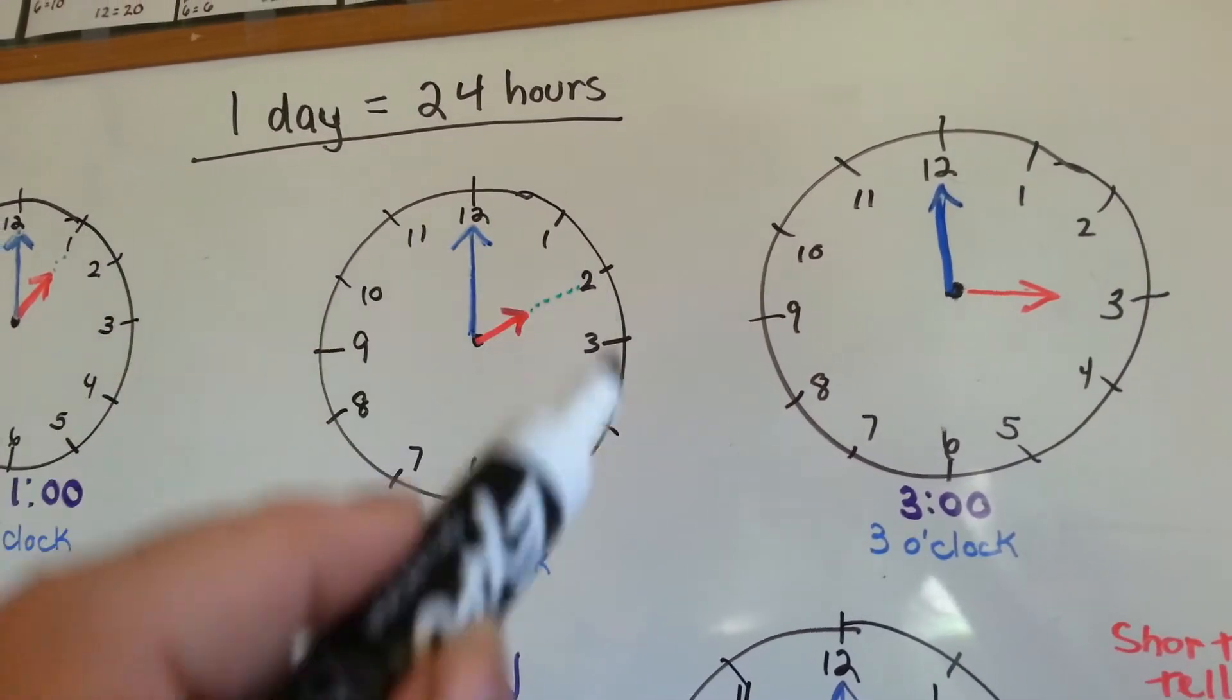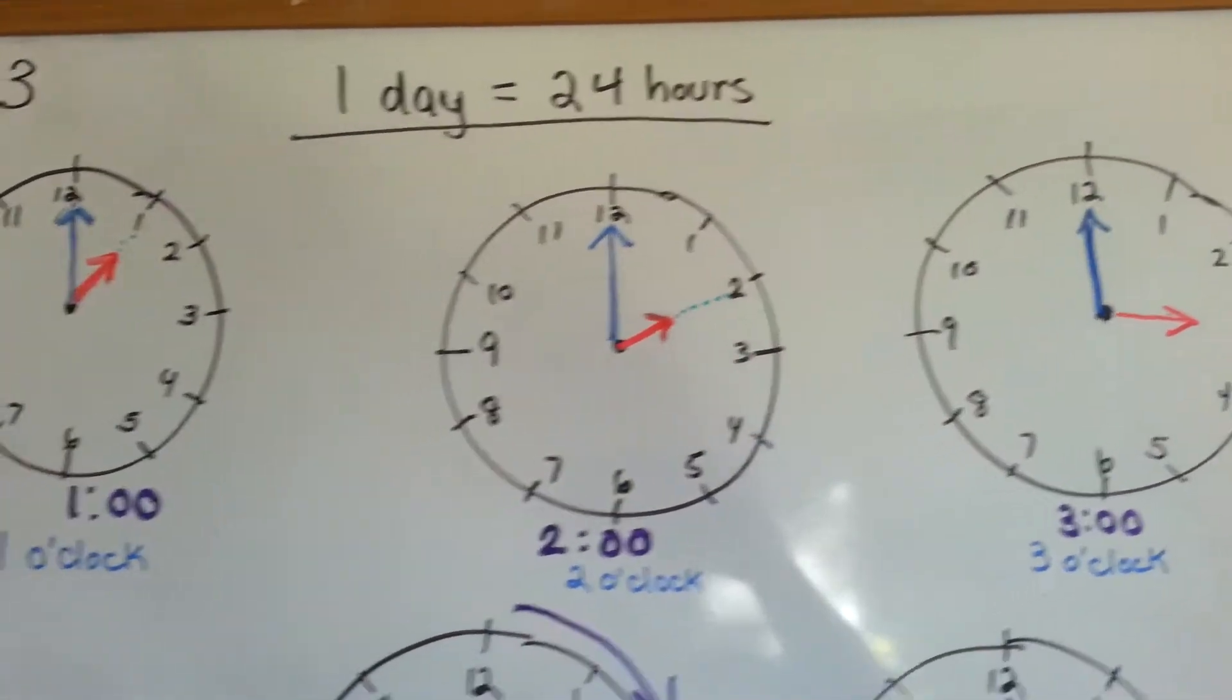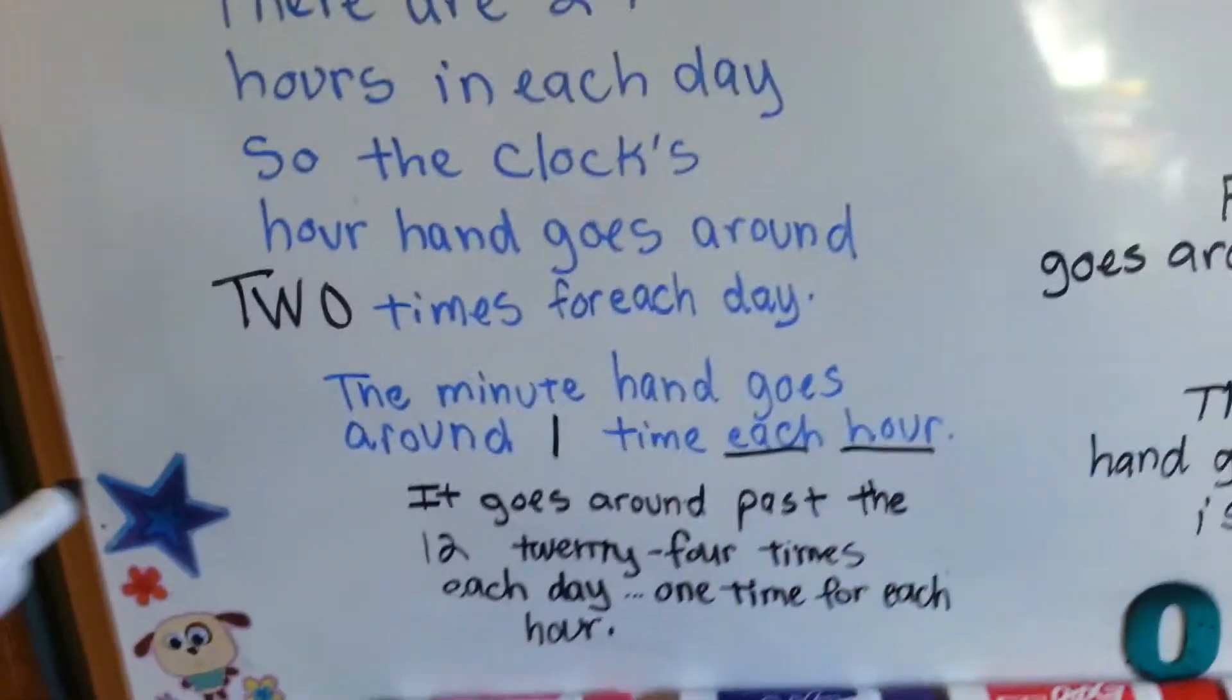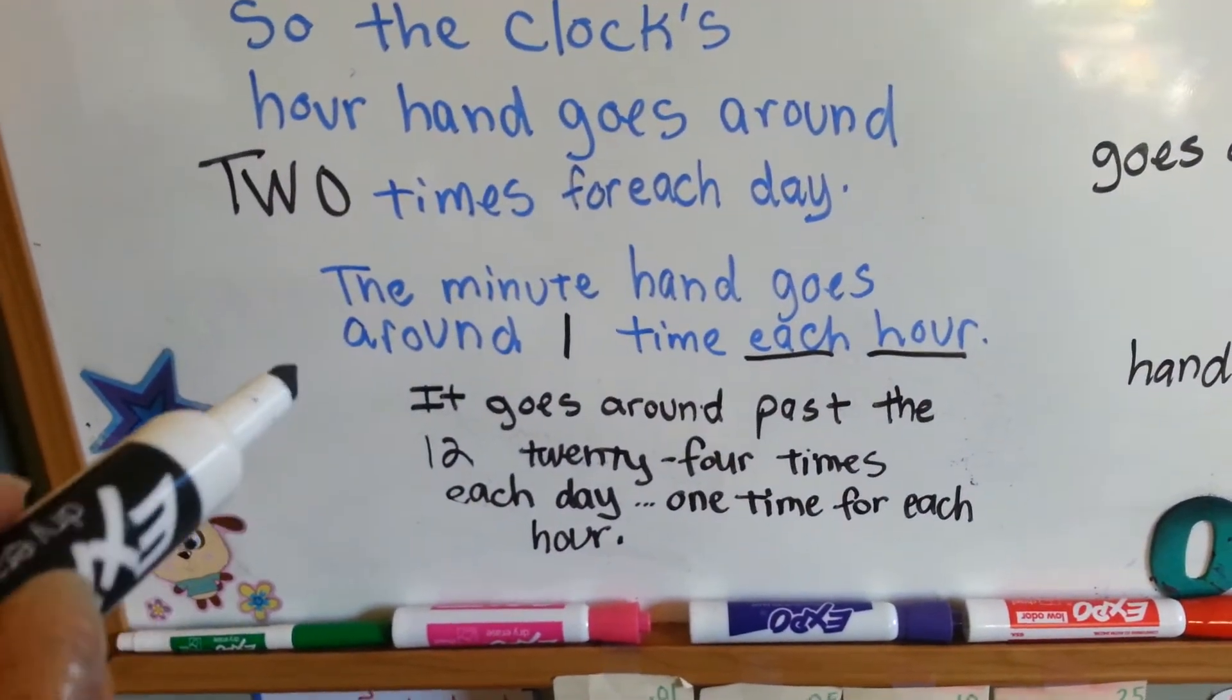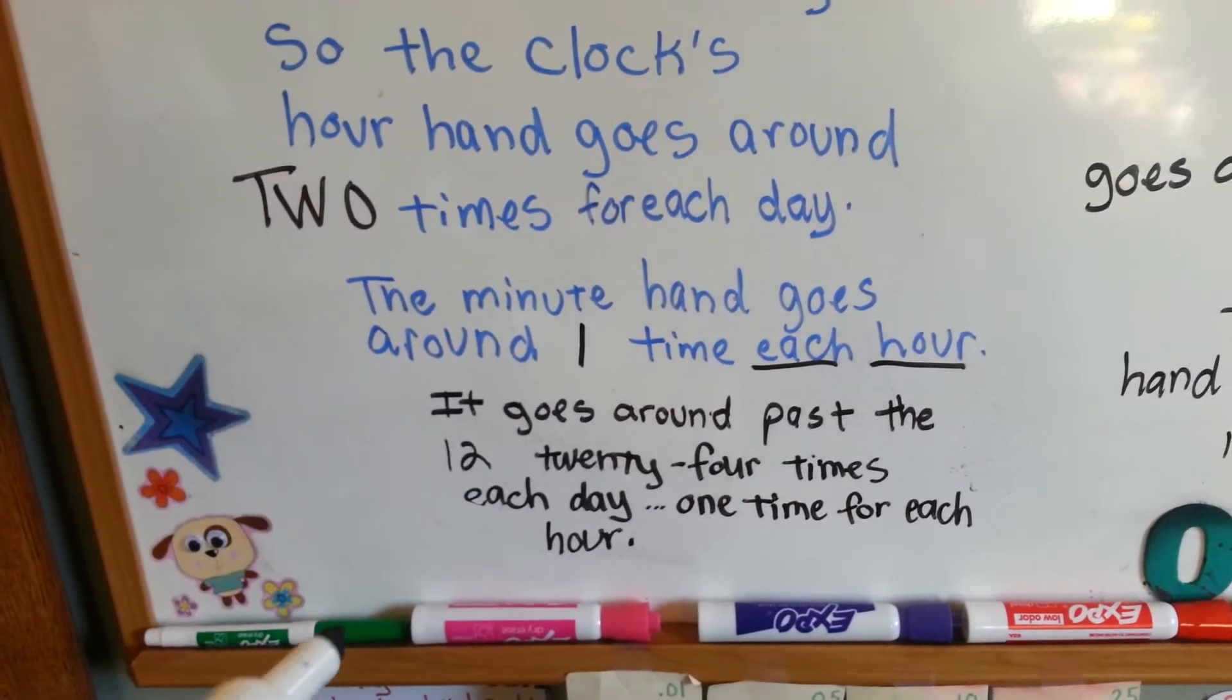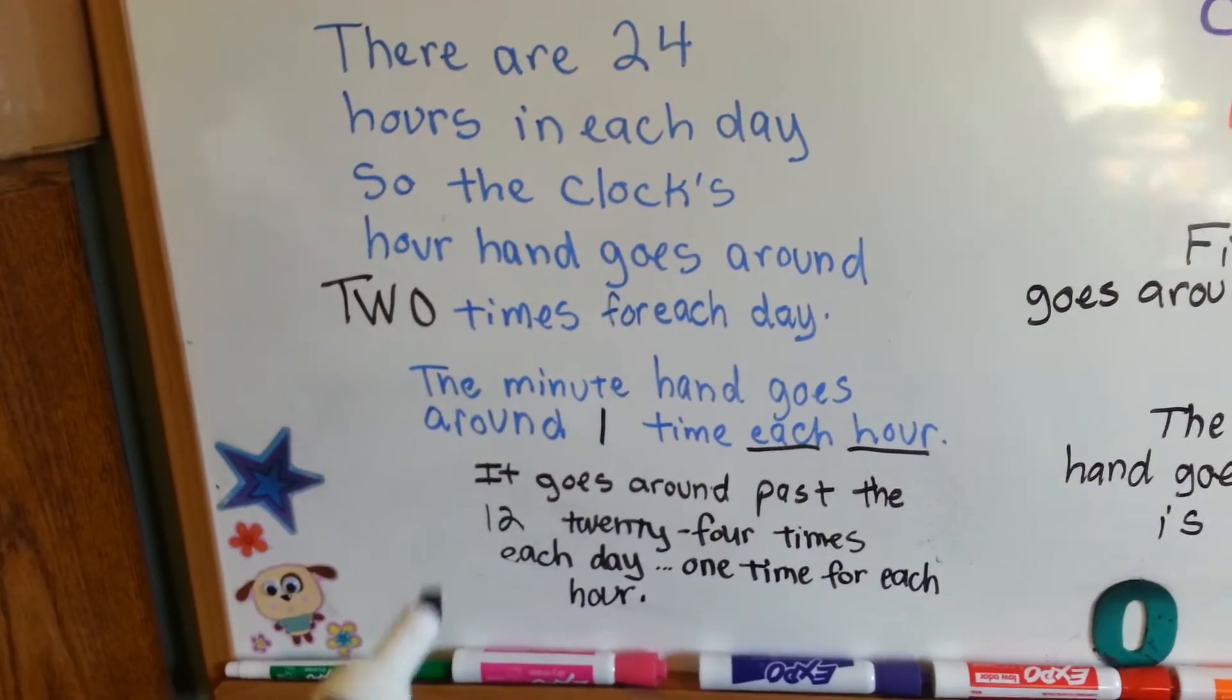So for every hour, the blue minute hand has to go around the clock, and it'll be the next hour. The minute hand goes around one time each hour. It goes past the 12 twenty-four times each day, one for each hour, because there's 24 hours in a day.